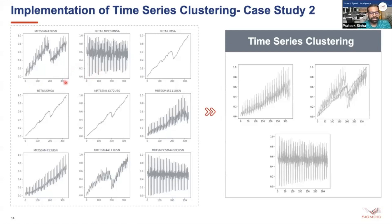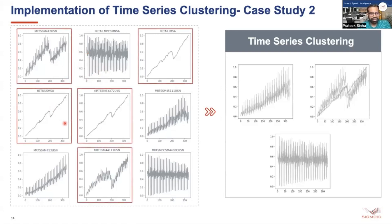In this data set we have all these trends, and we would like to cluster similar-looking trends into one cluster and the other trends into two additional clusters — three clusters in total.